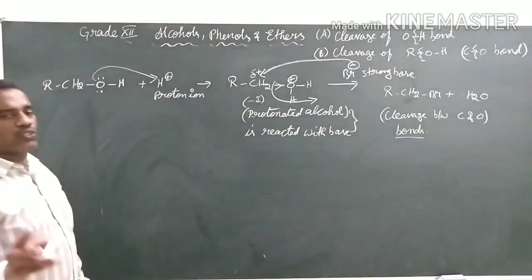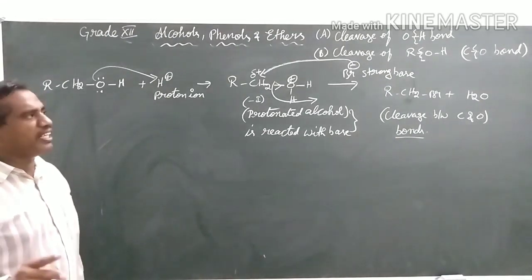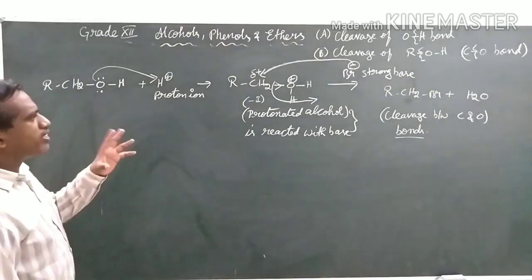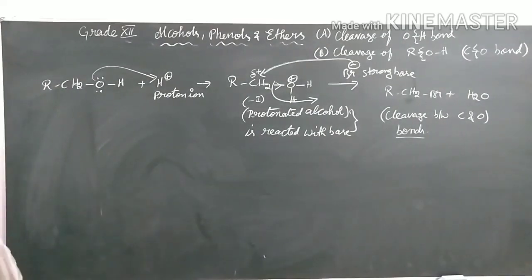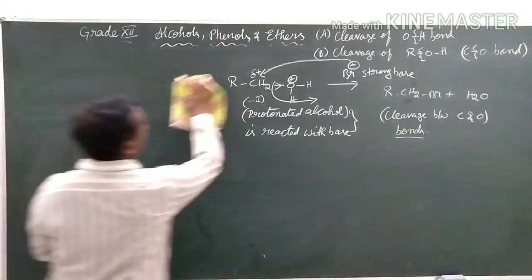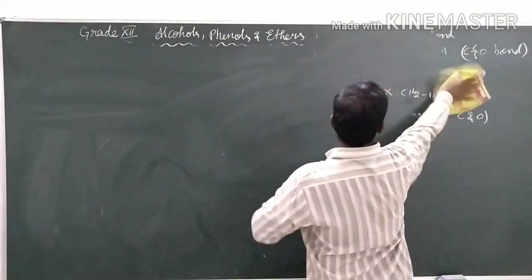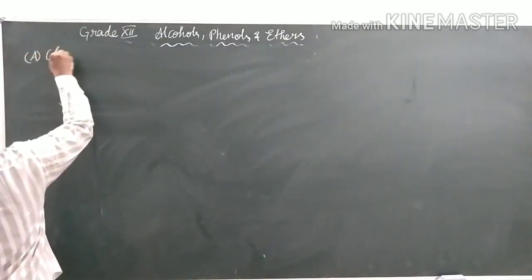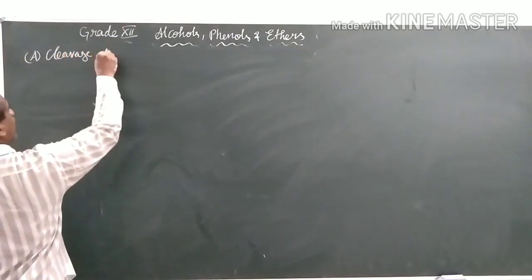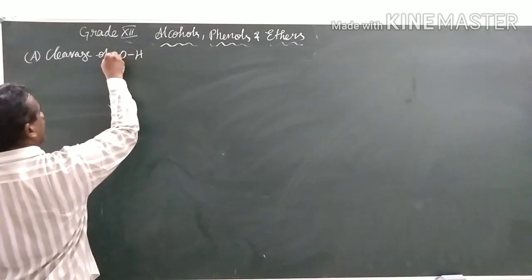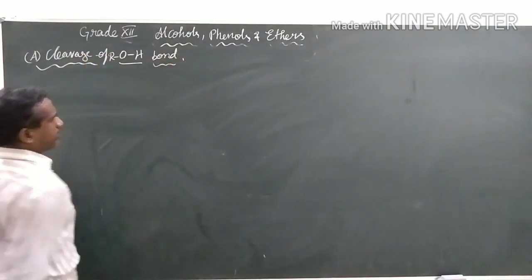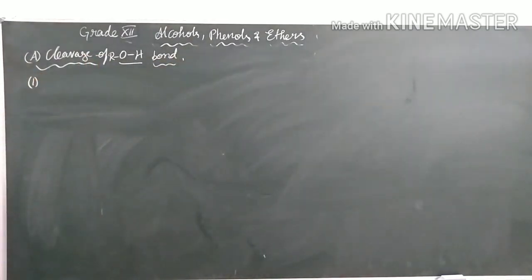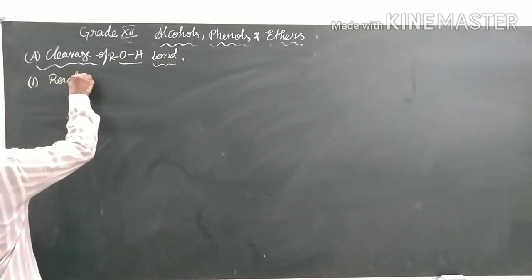So there are two main kinds of cleavages: cleavage between oxygen-hydrogen, and cleavage between carbon-oxygen. Based on this, our topics are going to continue. Let us take the first continuity topic — cleavage of the O-H bond.